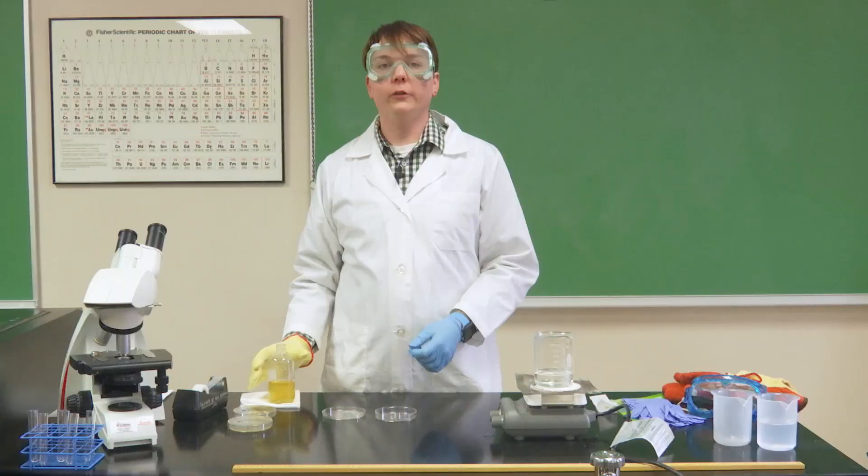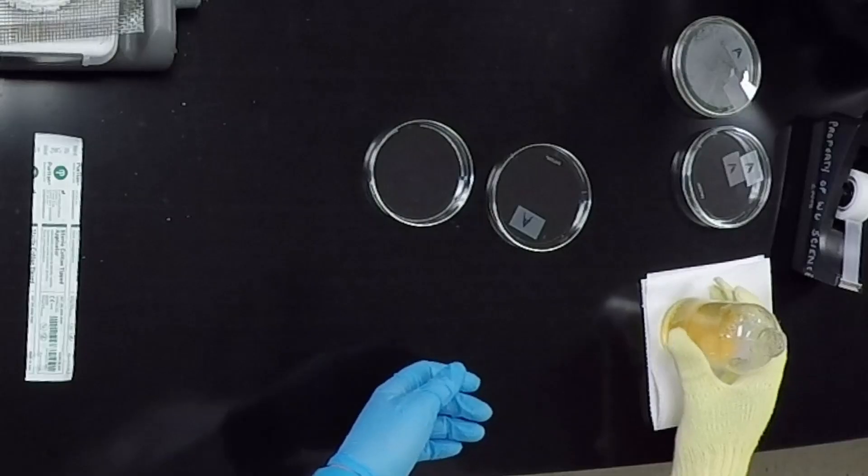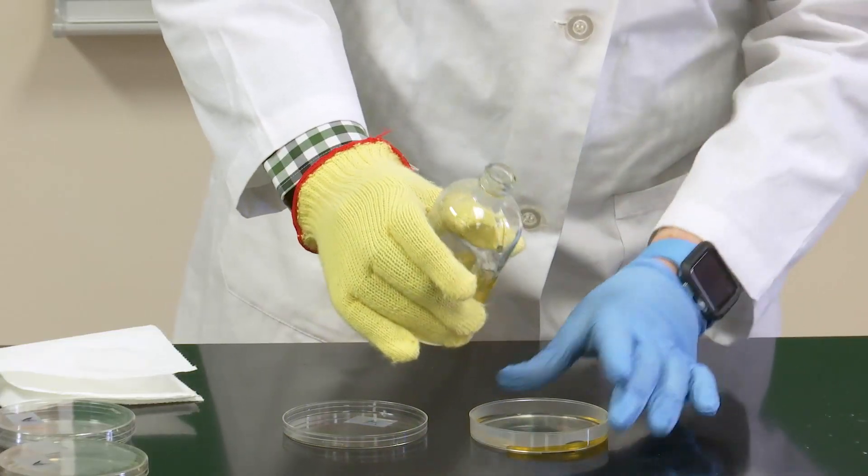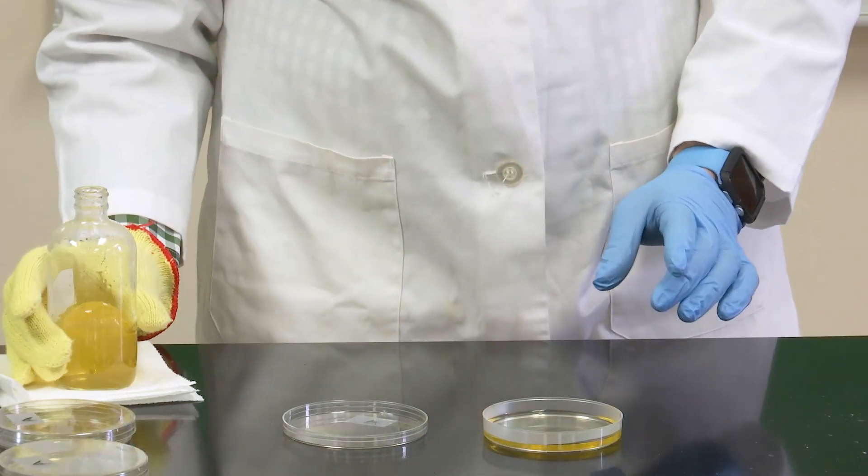Allow it to cool for a bit until you can safely pour it into each petri dish. You will only need a thin layer that coats the entire bottom of the dish. Give it a couple minutes to rest and cool. It will harden into a thick gel.